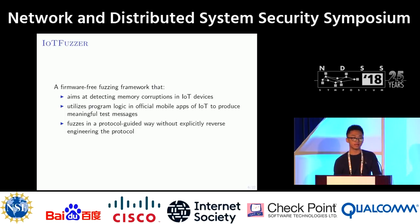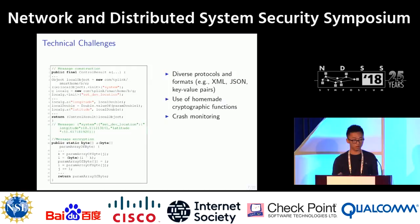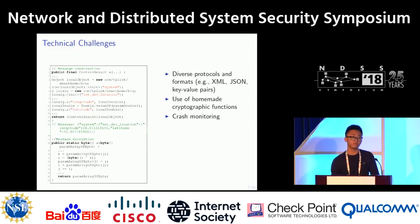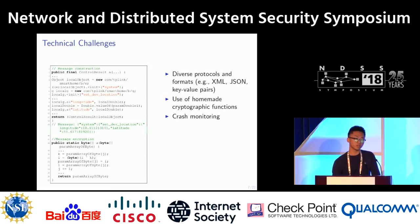A highlight feature is that it fuzzes in a protocol-guided way without explicitly reverse engineering the protocol. When building this tool, we encountered several challenges. First, vendors do not use unified protocol formats — they may use XML, JSON, or just key-value pairs. As shown on the left-hand side, a piece of example code extracted from an IoT app uses JSON as the message format. We wish to handle diverse protocol formats, but automatically reverse engineering the protocol is too heavy.